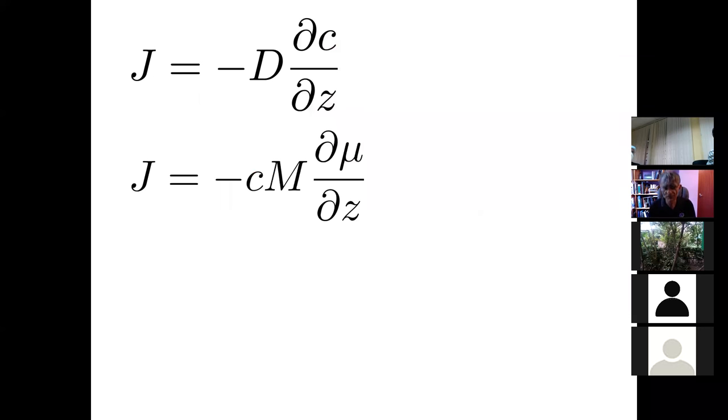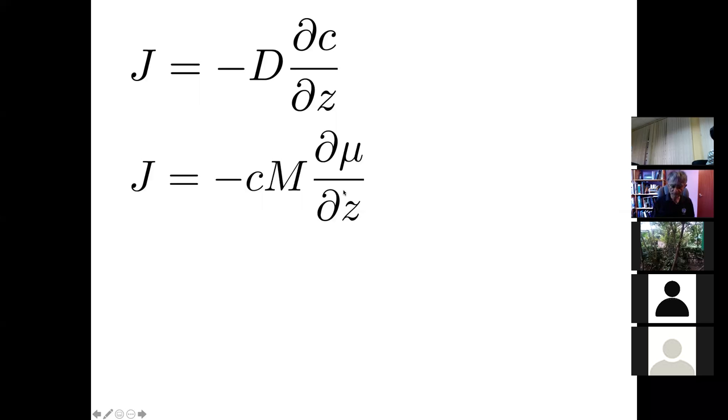We have Fick's equation at the top, which says the flux is proportional to the concentration gradient. But we've now decided that cannot be correct — it must be proportional to the free energy gradient, which is dμ/dz. We have another proportionality constant called mobility to relate the flux and the force. This concentration term comes in because μ is per unit concentration. So we have Fick's law and this corrected expression, which is the correct expression for the flux.